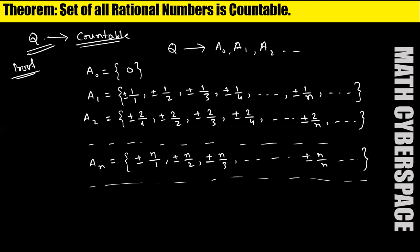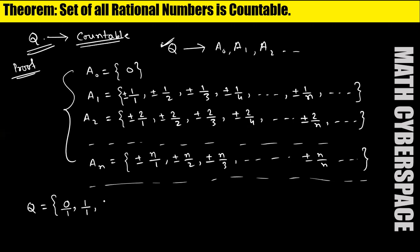We have broken set Q into these sets, so we have to arrange these elements in such a way that we can get that one-to-one correspondence. Q equals — first write the element 0 (you may consider this as 0/1). Now increasing the numerator: 1/1 and also −1/1. Then increase the numerator again: 2/1 and −2/1. The first element belongs to A0, the next two to A1, and 2/1 and −2/1 are elements of A2.